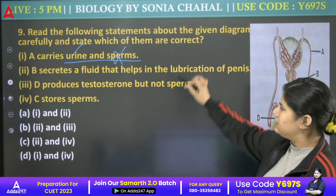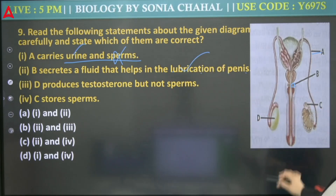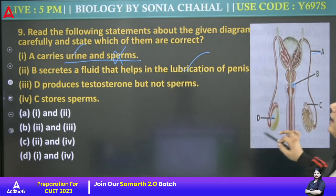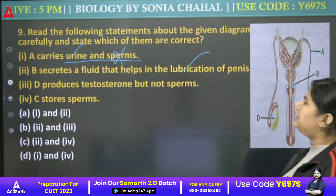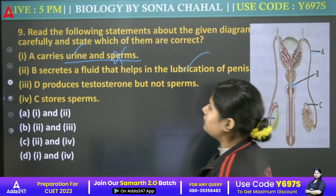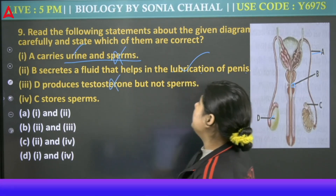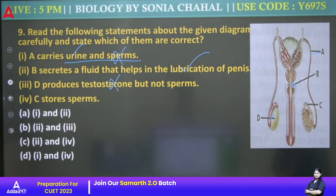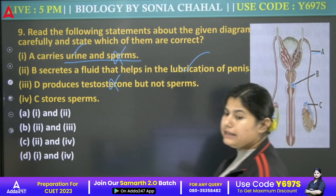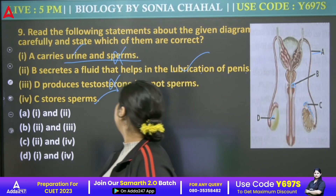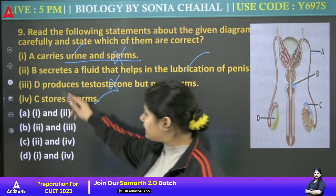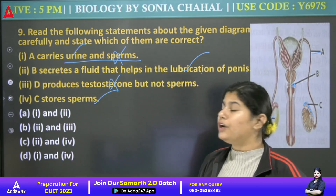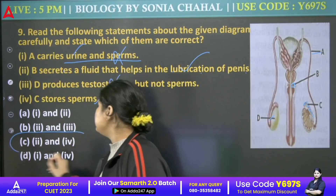D, that is testis — it produces testosterone but not sperm, so that is incorrect. C stores sperm — and C here refers to the epididymis, that is a correct statement. So there are two correct statements — 2nd and 4th. Answer will be C — 2nd and 4th.